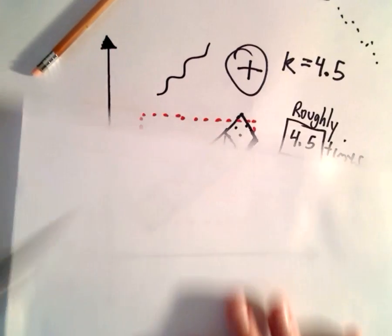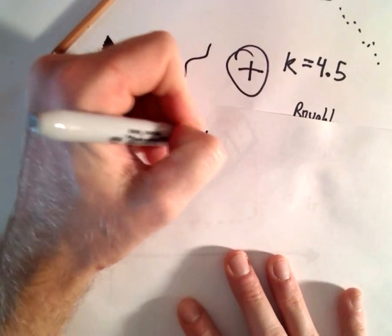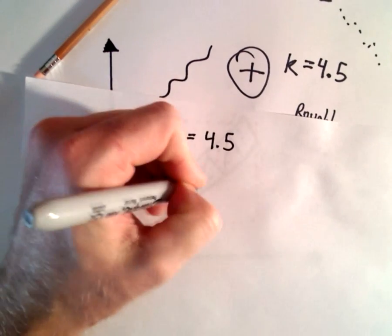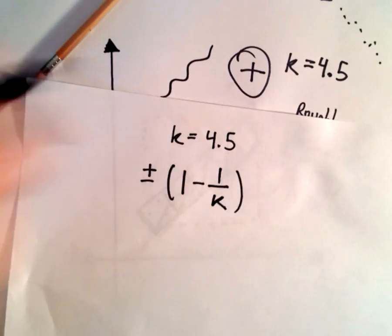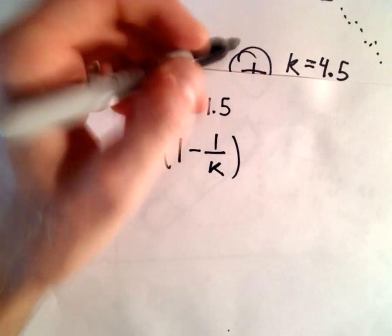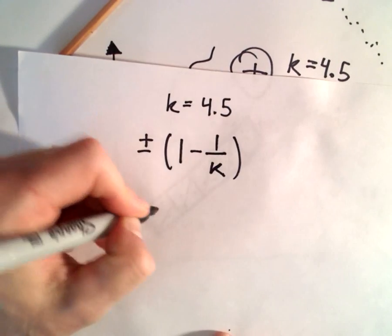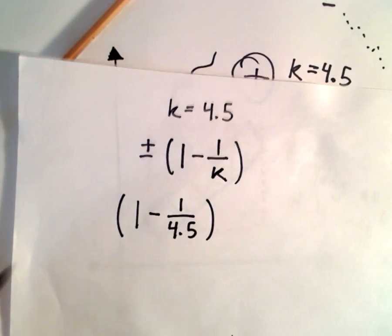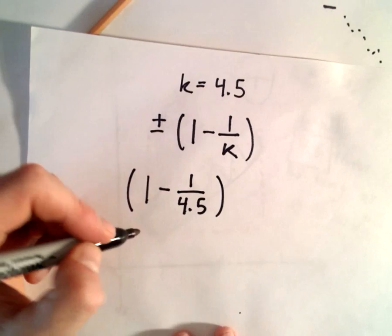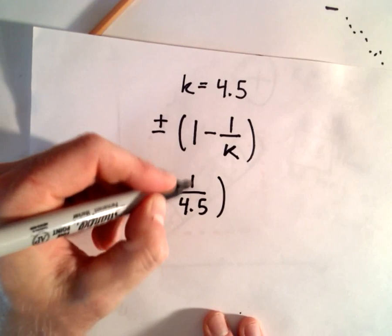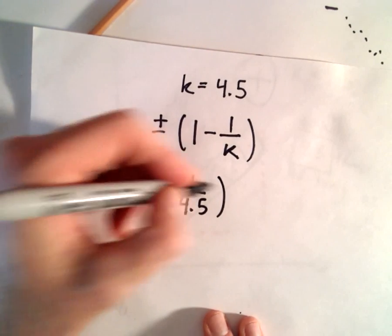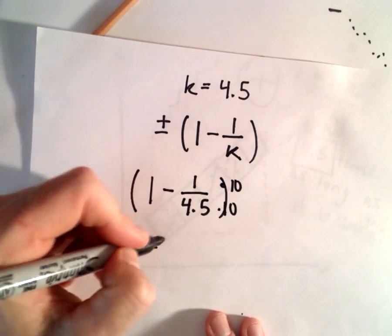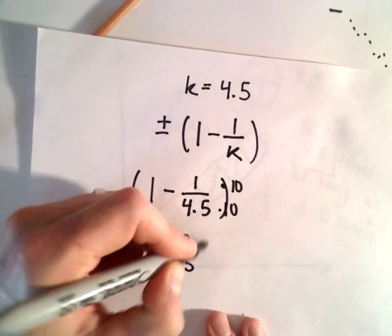Let's compute this real quick and get a rough estimate for our correlation coefficient. We'll use positive or negative 1 minus 1 over k. Since our data was moving up, we'll use positive. So we've got 1 minus 1 over 4.5. If we do this by hand, multiply top and bottom by 10. That gives us 1 minus 10 over 45.